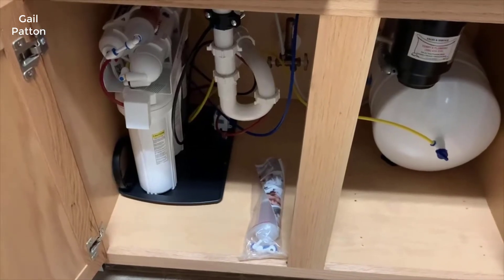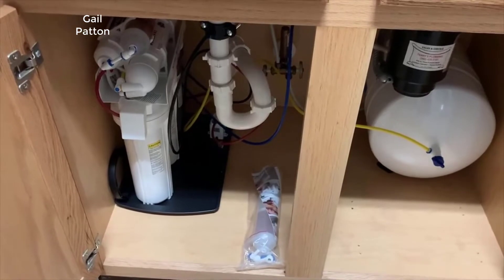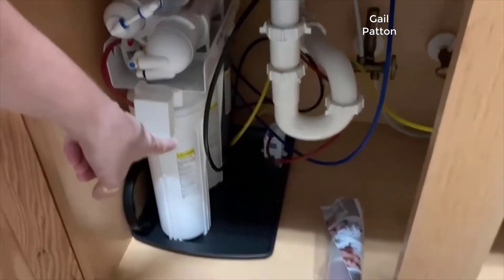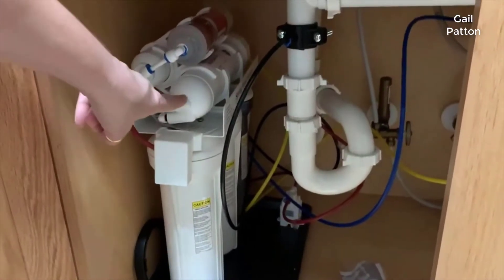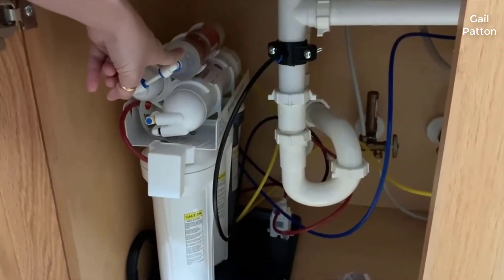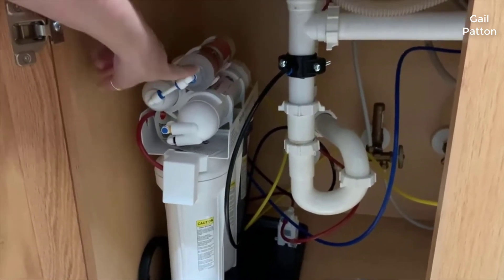This is the iSpring six-stage reverse osmosis water filtration system. As you can see on the bottom down here, the first three stages, then on top you have the next three stages. The top stage right here is the mineral filter, which adds minerals back into the water to give it bottled water quality taste.